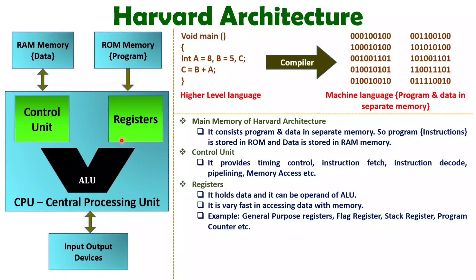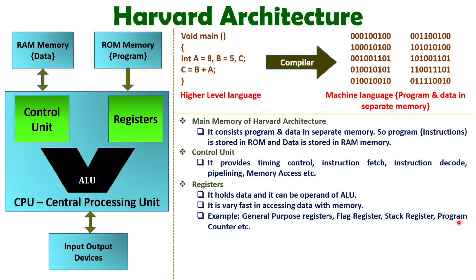When we talk about registers, there are many registers inside the CPU. With the use of registers, the CPU performs all arithmetic, logical tasks and instruction execution. In future videos, I will explain how register organization works in a general purpose computer. I have listed a few registers like general purpose registers, flag registers, tag registers, and program counter. These registers are used to execute any instructions inside the CPU.